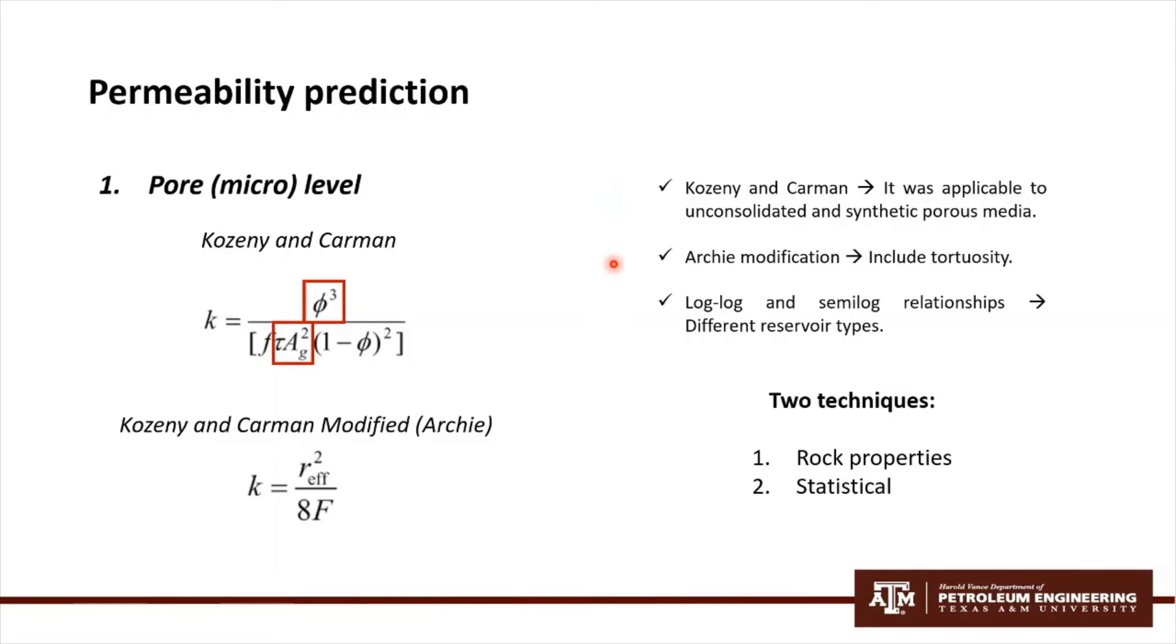Later, Archie proposed a modification of it, and log-log and semi-log relationships were reported between porosity and permeability for different reservoir types. Finally, there are two main techniques that involve rock properties such as irreducible water saturation, shale content, and grain size, and also statistical techniques that we can apply to obtain permeability.